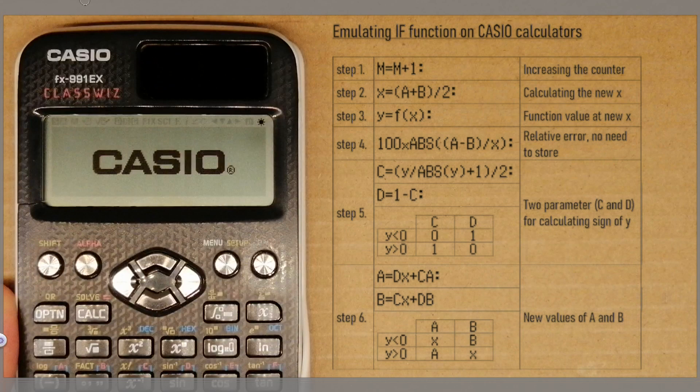Finally, we calculate the new range. If y is negative, the value of a is replaced with x and b does not change. If y is positive, the value of b is replaced with x and a does not change. From this point we repeat the iteration until the error reaches the accepted value.